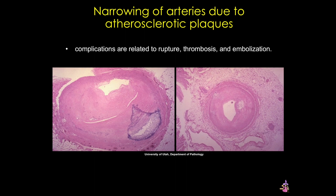Shown here are several examples of severe narrowing in coronary arteries. The left image also shows an added complication — a large bluish area of calcification.